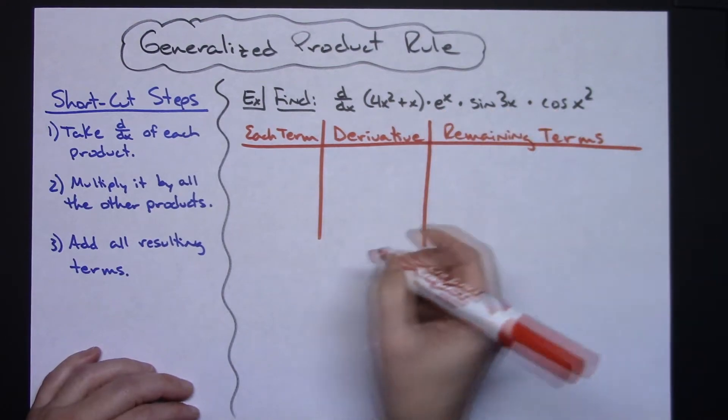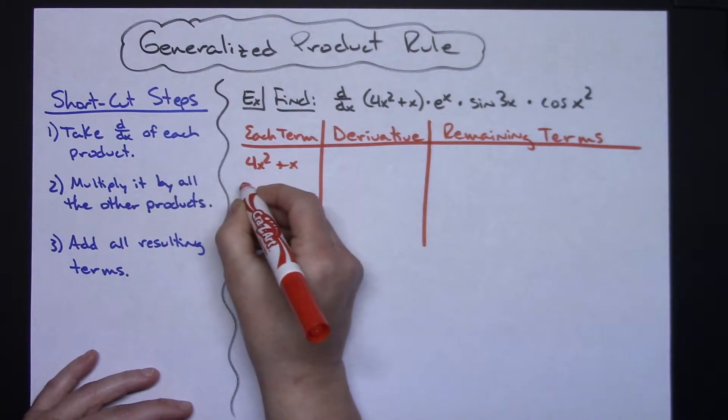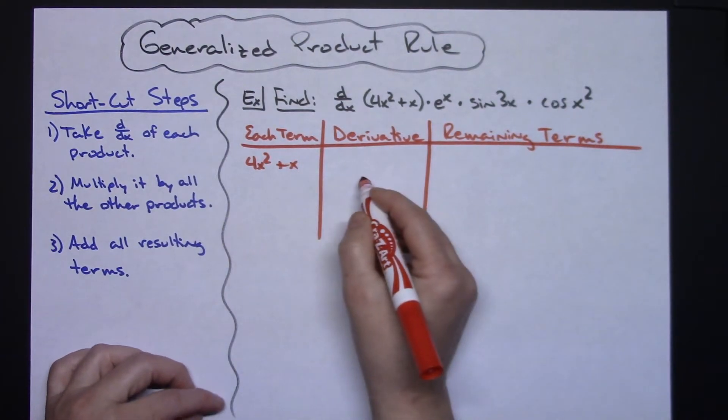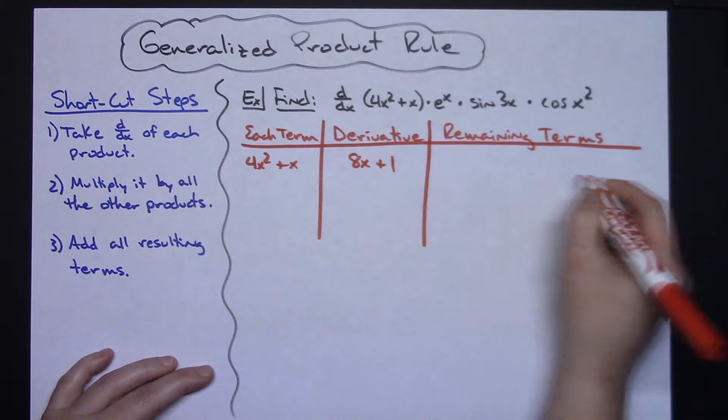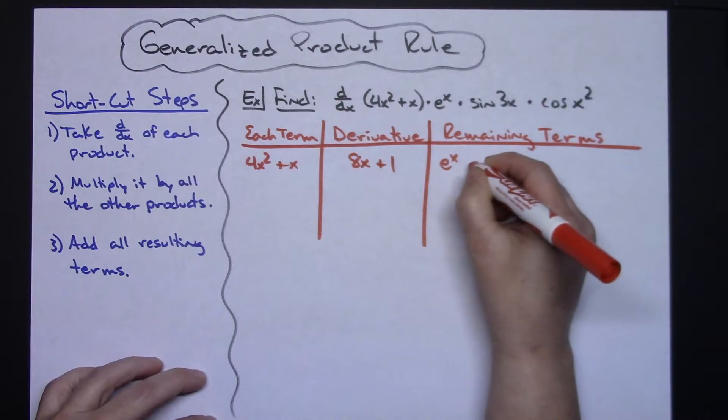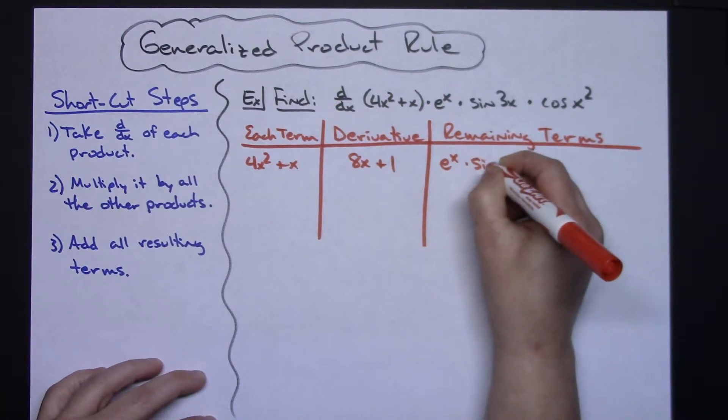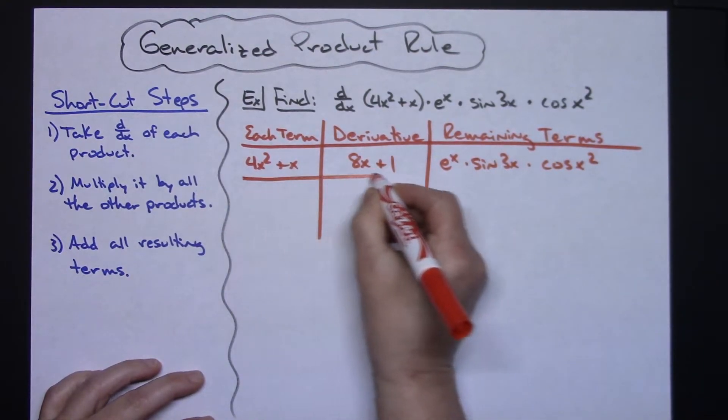So I'm gonna take each one of these individual terms and write them down here. So I'm gonna have 4x squared plus x, and then its derivative is gonna be 8x plus 1. And then the remaining terms would be all three of those. So e to the x times sine of 3x times cosine of x squared. So there's my first one.